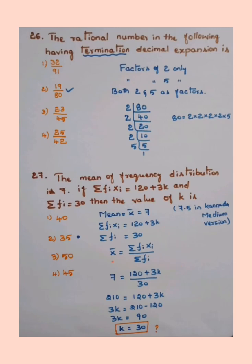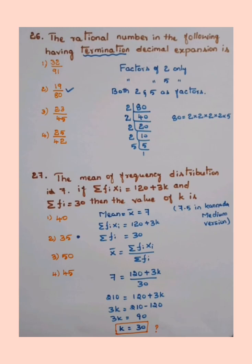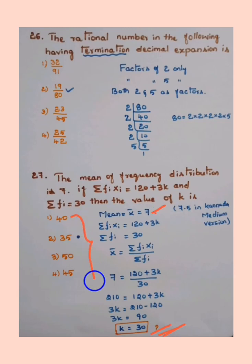The formula is: mean = sigma fi·xi divided by sigma fi. Substituting: 7 = (120 + 3k) / 30. So 30 × 7 = 210. Rearranging: 3k = 210 − 120 = 90, therefore k = 90/3 = 30. Since mean was taken as 7, we get k = 30, which is not among the given options. If you use mean = 7.5 you get k = 35, which matches the options.